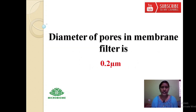Membrane filters are used to remove vegetative cells but not viruses. They are made of cellulose acetate, cellulose nitrate, polycarbonate, or polyvinylidene fluoride. The diameter of pores in a membrane filter is 0.2 micrometers.